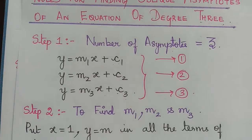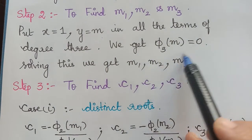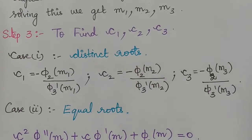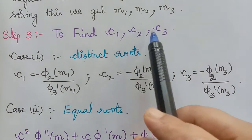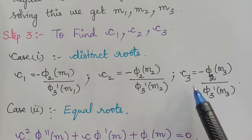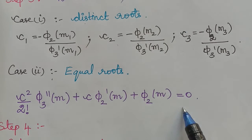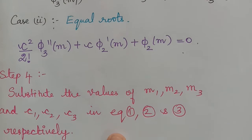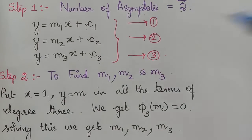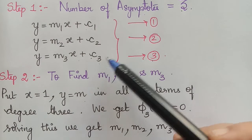The next step is to find the values of m₁, m₂, and m₃ by substituting x = 1 and y = m in the highest degree terms and solving φ₃(m) = 0. After finding m₁, m₂, m₃, we find the corresponding c₁, c₂, c₃. If the roots are distinct, we use the formula for each cᵢ; if the roots are equal, we use the equal-roots equation. Finally, we substitute all values into the three asymptote equations to find all equations of the asymptotes. This is the method for solving an equation of degree 3.